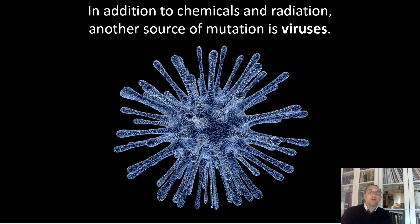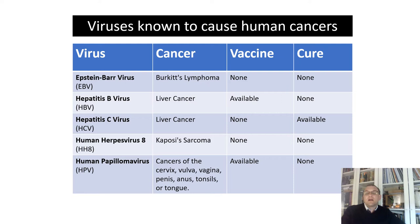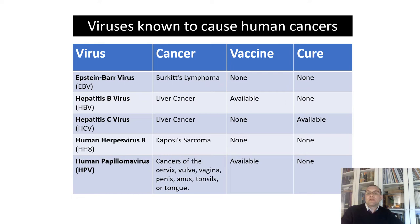The viruses known to cause human cancers are: Epstein-Barr virus (EBV), hepatitis B virus, hepatitis C virus, human herpesvirus 8, and human papillomavirus (HPV). Keep in mind that even if you are infected with a virus linked to cancer, it doesn't mean you will get the disease for sure. There are things you can do — from vaccines to lifestyle choices — to prevent yourself from catching the virus. Epstein-Barr virus is a common virus most people get infected with at some point in their lives. For others it can cause mononucleosis and other more serious conditions from viral meningitis to pneumonia. Several cancers are linked with Epstein-Barr virus, but the most common is Burkitt's lymphoma.